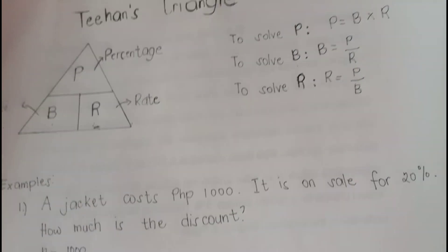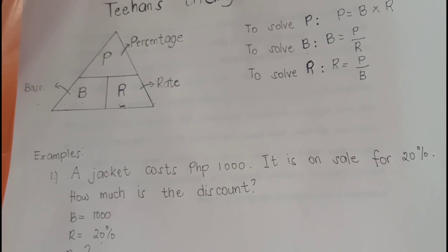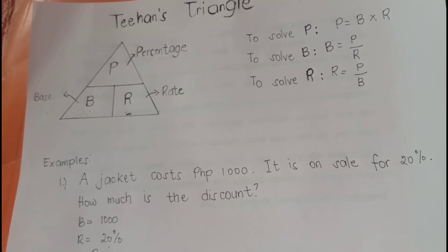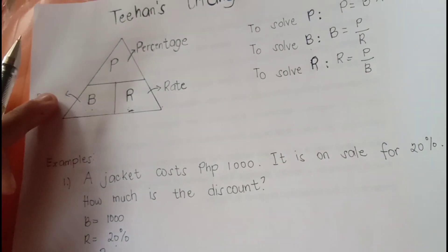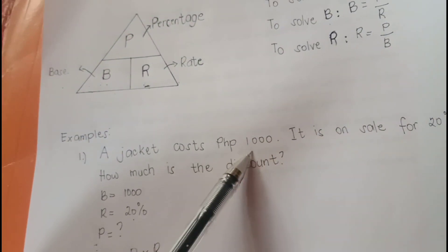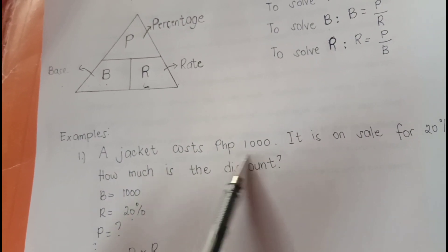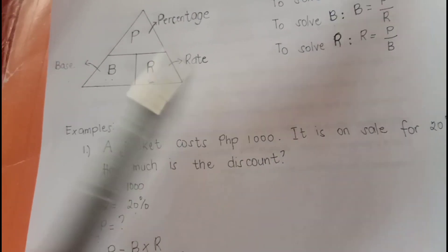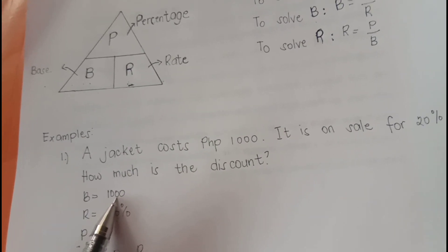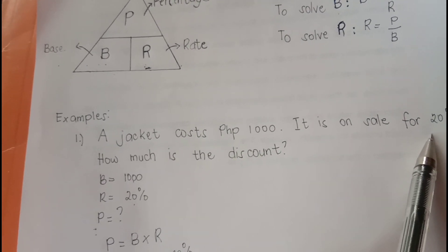We have an example here. Number one: a jacket costs 1,000 pesos. It is on sale for 20%. How much is the discount? The given are 1,000 pesos, which is the original price or the base, and 20%, which is the rate.